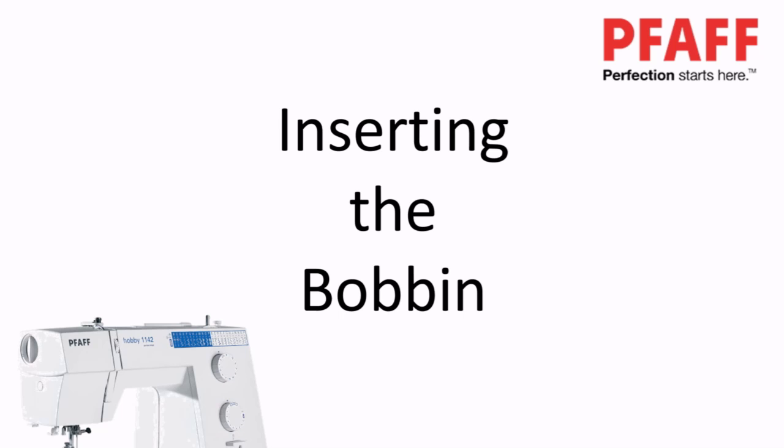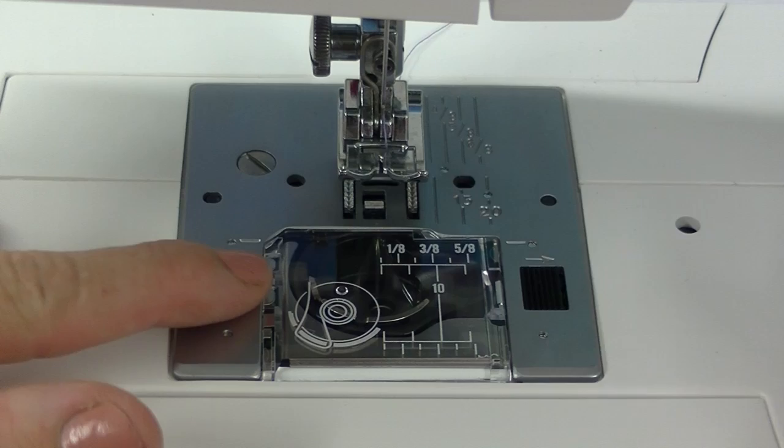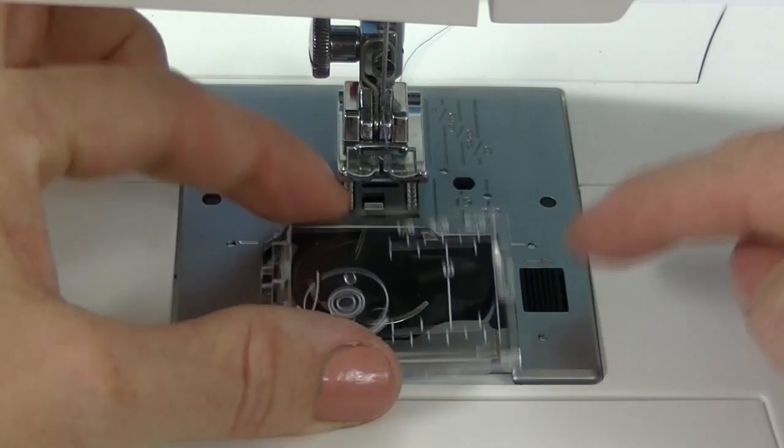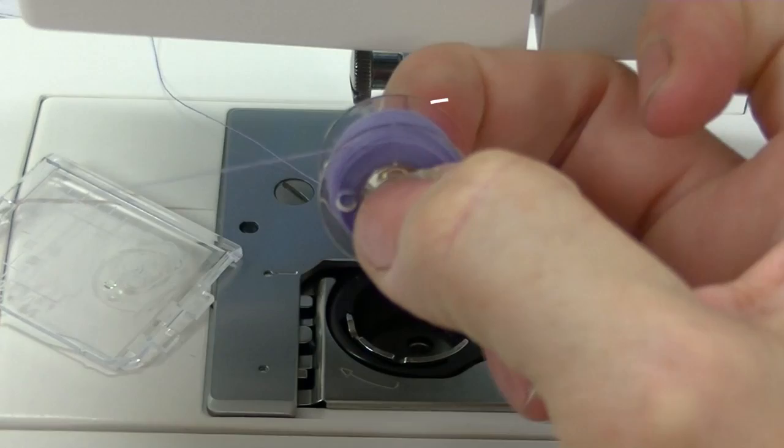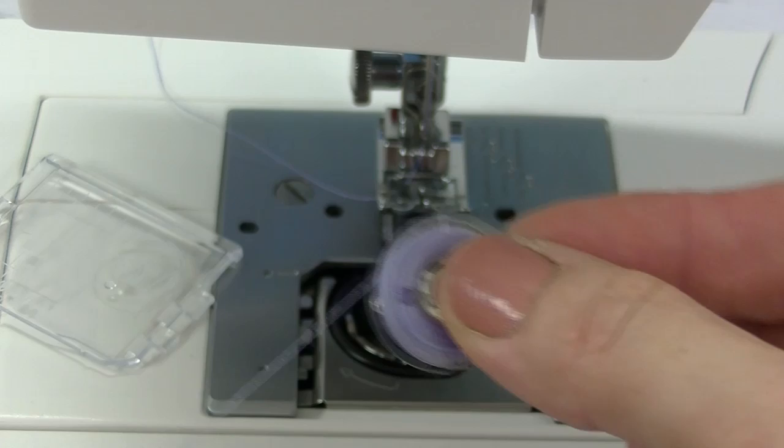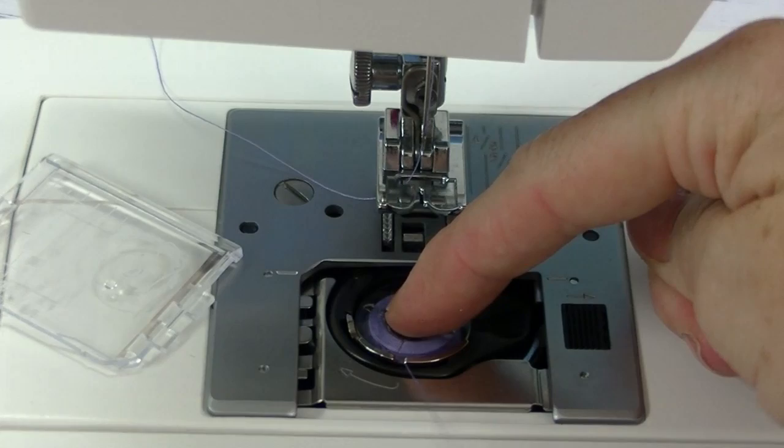To insert the bobbin, we need to open the bobbin cover. So to do that, slide the dial to the right, that's this one here, and the bobbin cover will slip out of place. To ensure your bobbin is in the correct position, you need to pull it off and see that the bobbin is winding anticlockwise. Once you know that's correct, you then place it into the bobbin case. Ensure that you hear a click as the thread is put into the bobbin tension.